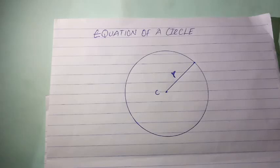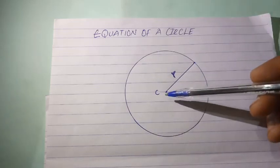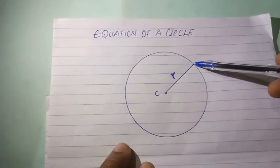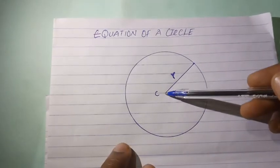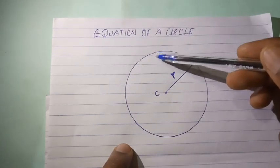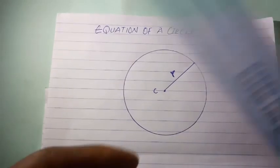Hello, good day viewers. Today in this tutorial I'll be talking about the equation of a circle, and I'm going to derive the general equation of a circle. For this shape to be a circle it must have a center and a radius, and every line from the center of a circle to the circumference will be the same length.